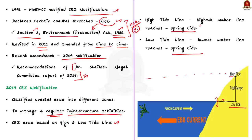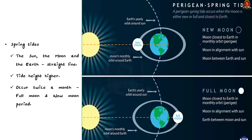You may ask what is spring tide. Spring tide occurs when the sun, moon and earth are in a straight line. During spring tide, the highest high tide and lowest low tide are reached. Spring tide occurs twice a month — once on the full moon day and once on the new moon day.